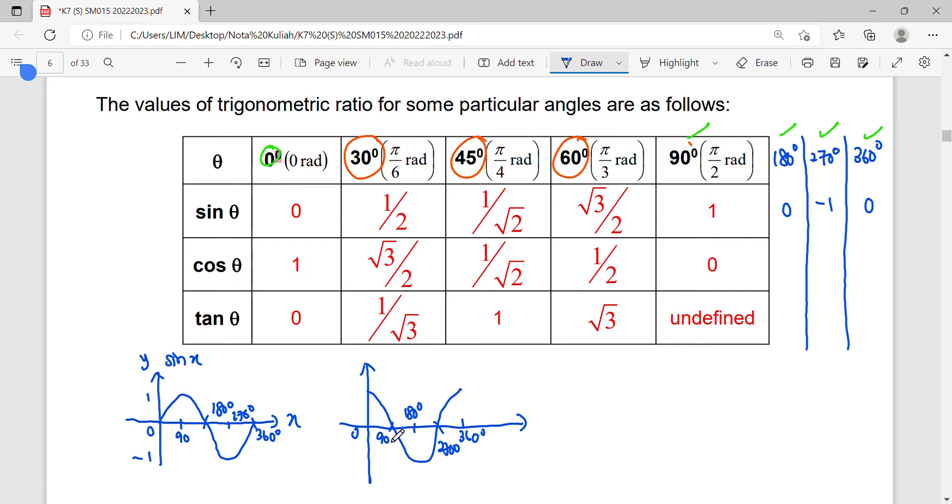At 180, the value is negative one, comes back to zero at 270, and then ending at 360 with value one.